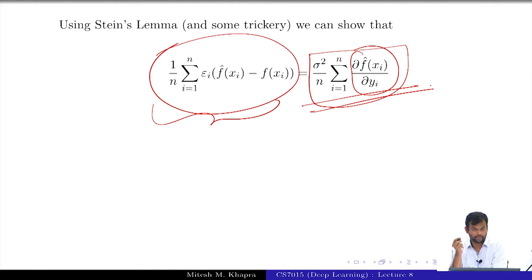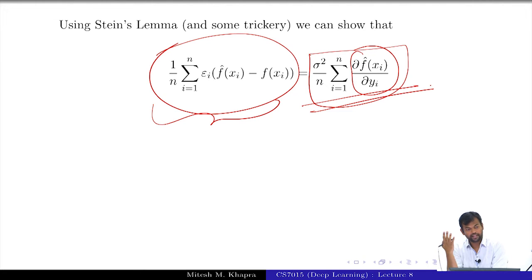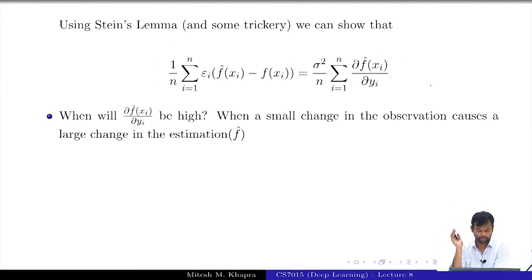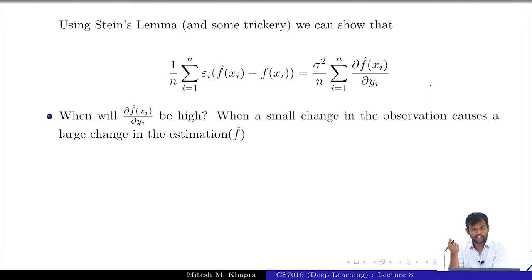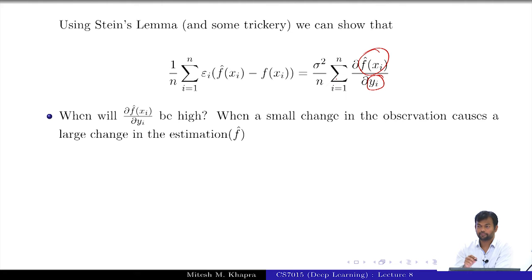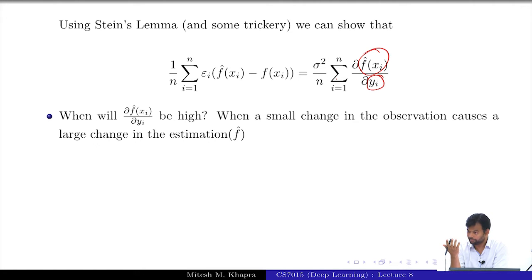Let us take one term in this summation. When would the ∂f̂(x_i)/∂y_i be large? What does it actually tell you? If I change one of these y_i's a bit, then the prediction for it is going to change by a lot. If the derivative is high, that means a small change in the true y observed leads to a large change in the predicted y.